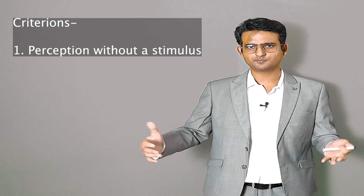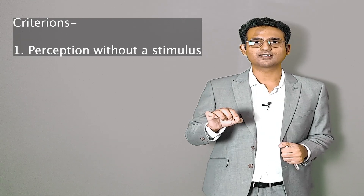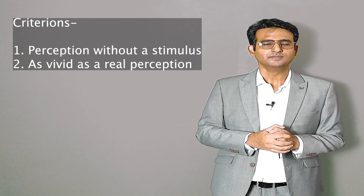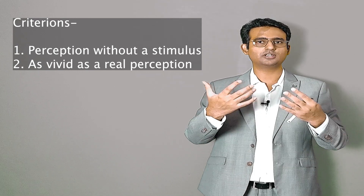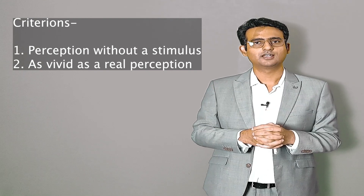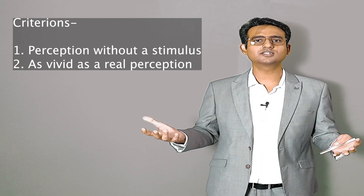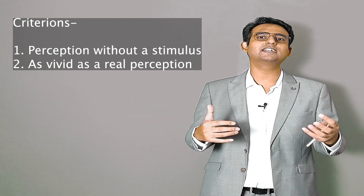The first criterion is the definition itself: it is a false perception without any object — no stimulus present. The second criterion is that hallucinations are as vivid as a real perception. Real perceptions have a quality of vividness — for example, looking at someone on a screen, you can perceive them clearly and in detail. Vividness refers to clarity and detailedness.